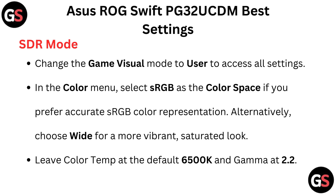SDR Mode: Change the game visual mode to User to access all settings. In the Color menu, select sRGB as the color space if you prefer accurate sRGB color representation. Alternatively, choose Wide for a more vibrant, saturated look. Leave color temperature at the default 6500 Kelvin and gamma at 2.2.